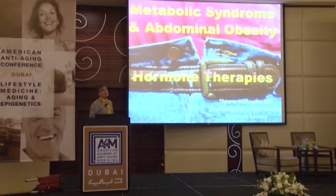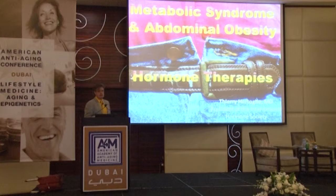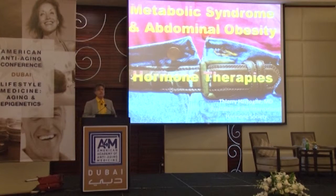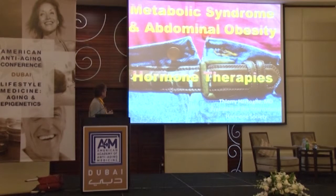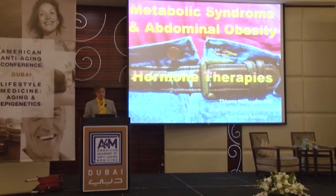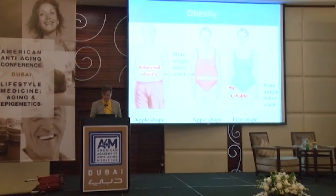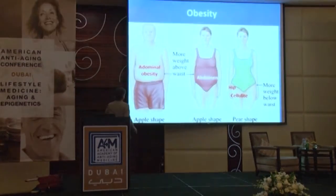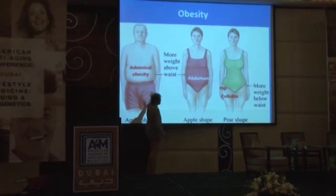A typical form of obesity is abdominal obesity. You can have obesity in the face or on the legs, but abdominal obesity is very typical for aging people. It is included in what is called metabolic syndrome, or metabolic X syndrome. Abdominal obesity refers specifically to fat accumulating on the belly.